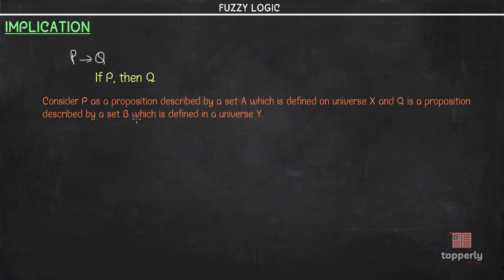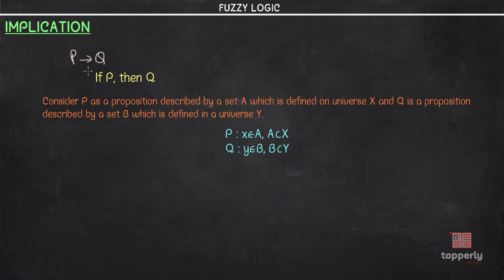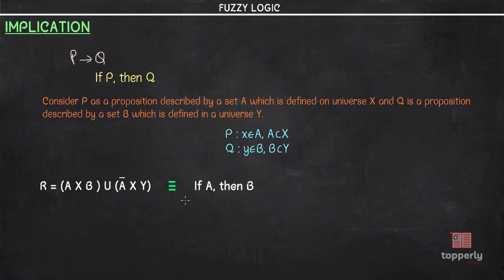Consider p as a proposition described by a set A which is defined on universe X, and q is a proposition described by a set B and this is defined in a universe Y. That is, p is a proposition defined such that an element x belongs to set A and A is a subset of universe X, and q is the proposition such that an element y belongs to set B and B is a subset of universe Y. In this case, the implication p implies q can be represented in the form of a set by a relation R, and the relation R is defined as R equals A cross B union A-bar cross Y, and this implication is equivalent to the linguistic rule form if A then B.